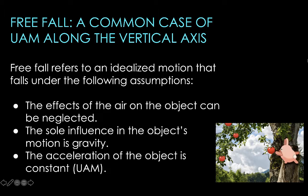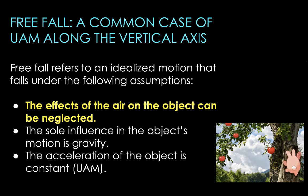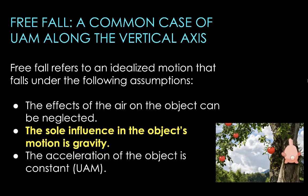Freely falling bodies are in that particular state because the effects of air on the object can be neglected. For example, an open sheet of paper allowed to fall downwards would sway left and right — that's not in free fall. But if you crumple that piece of paper and drop it, it will go straight down and not be significantly affected by air resistance. So what you can consider as a freely falling body is the crumpled paper, not the widely spread sheet. Another way of describing freely falling bodies is that the sole influence on their motion is gravity, because of the negligible effects of air resistance.